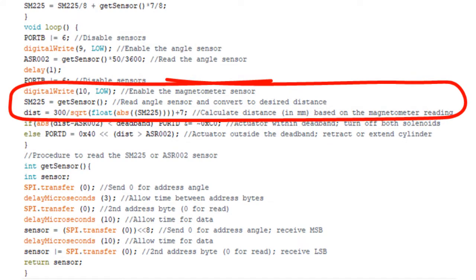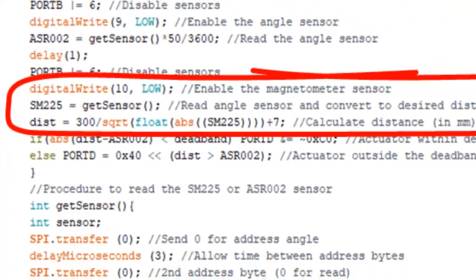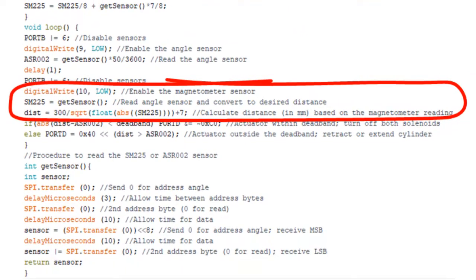For this demo, we use a simple inverse square root approximation for distance as a function of field. For better accuracy, we could calibrate a piecewise linear lookup table as we demonstrated in another video.